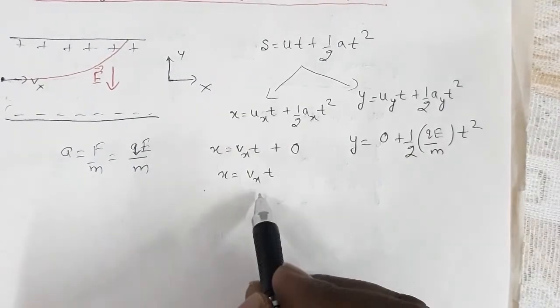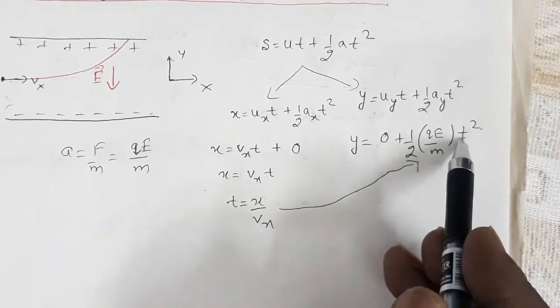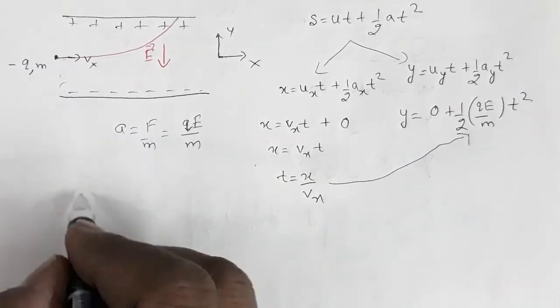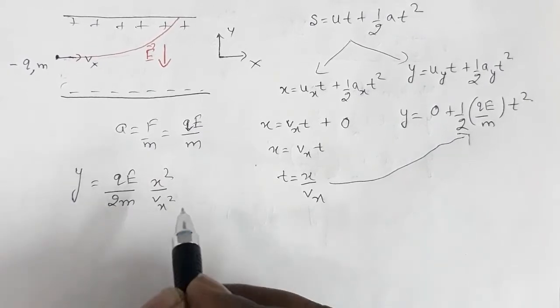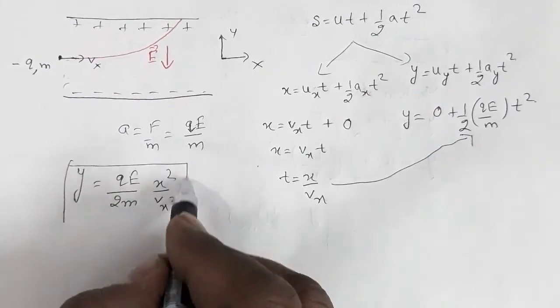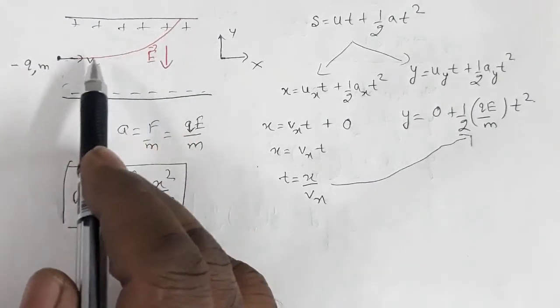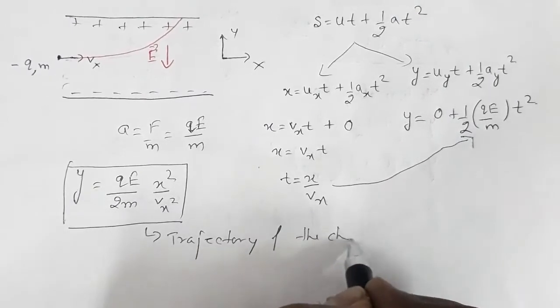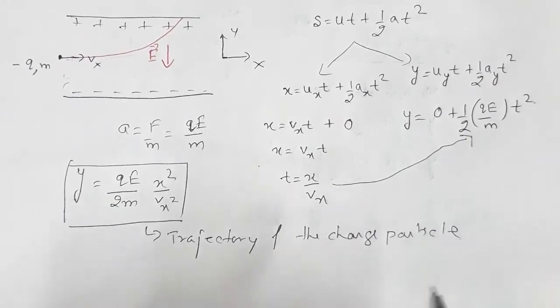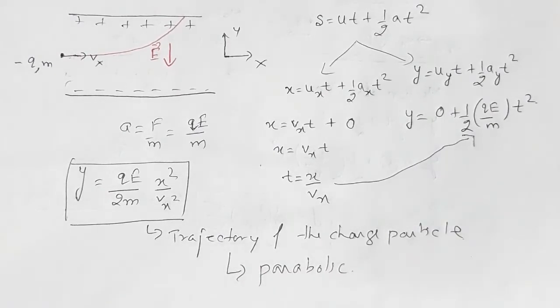So y = (qE/2m)·t². From the x-equation we have t = x/vx. Substituting this value of t into the y-equation gives y = (qE/2m)·(x²/vx²). This equation is in the form of a parabola equation, so it represents the trajectory of the charge particle, and we observe that this trajectory is parabolic.